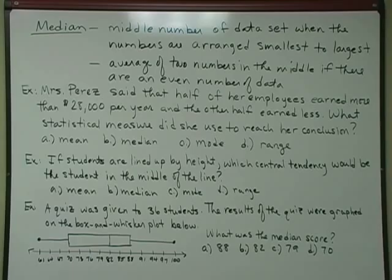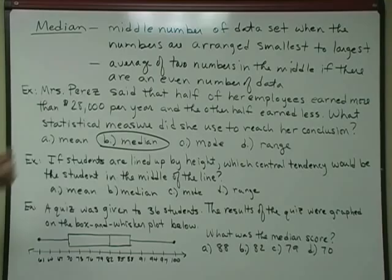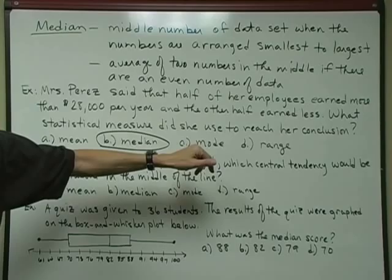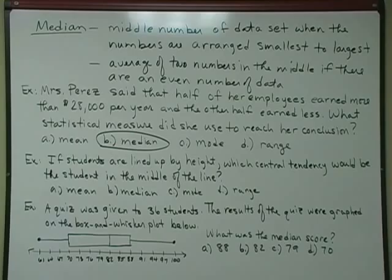Here's an example of a problem, and again, chances are the problems are not going to just ask you to find the mean or the median, but it's probably part of the problem somehow hidden in it. First example, Mrs. Perez said that half of her employees earn more than $28,000 per year, and the other half earn less. What statistical measure did she use to reach her conclusion? Well, half of her above and half of her below, she's got the one in the middle. So just like you would think, it would be the median. Now, we know what the mean is, that's when you average them. Sometimes the average, the mean and the median, it'll turn out to be the same number, but not always. If you're wondering what a mode is, we're going to talk about that next, and the range we've talked about in a previous video.